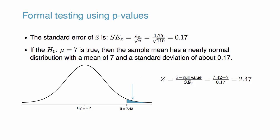First compute the z-score of the sample mean, which is 2.47. Then use the normal probability table to find the shaded area, which is 0.007. This is the p-value.